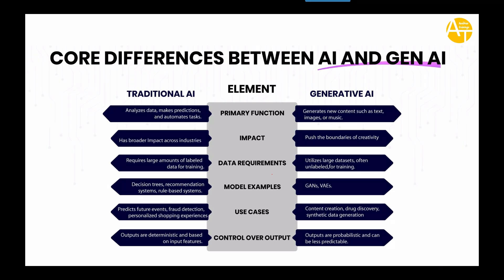Now let's understand the core differences between AI and Generative AI on different aspects. First is primary function: traditional AI is predominantly used to analyze data, make predictions, and automate tasks — for example, predicting house prices or predicting which patients have the ability to develop heart disease. Whereas Generative AI can generate new content such as text, images, and music — like asking ChatGPT to write a beautiful essay. In terms of impact, AI has a broader impact across industries, whereas Generative AI pushes the boundaries of creativity — blog writers, novel writers, and YouTubers are successfully using Generative AI to generate new content.